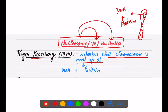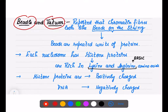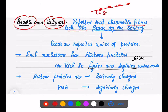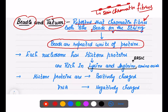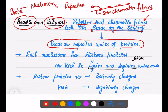Beadle and Tatum said that chromatin fibers look like beads on a string — the thread is the chromatin fiber, and on it there are structures like beads that are many in number. These beads are repeated units of proteins, and they were later identified as nucleosomes.